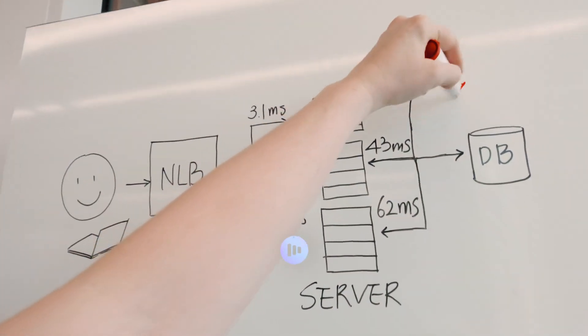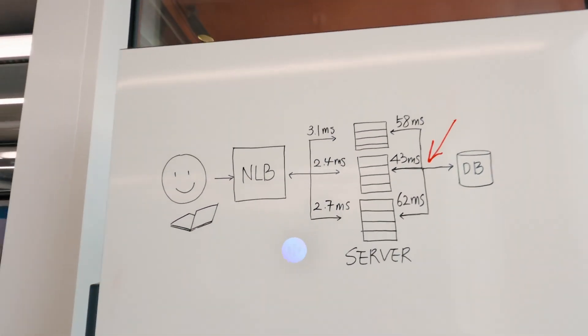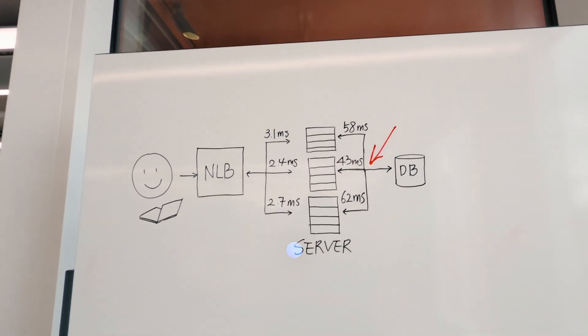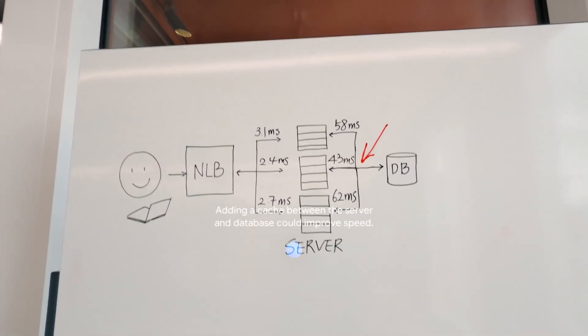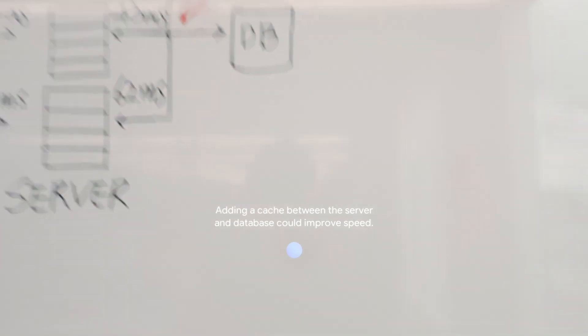What can I add here to make this system faster? Adding a cache between the server and database could improve speed.